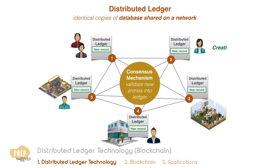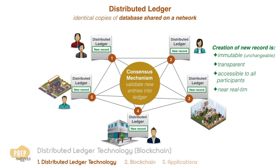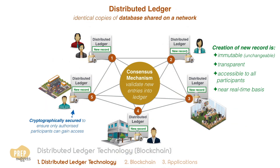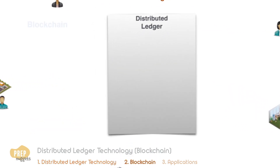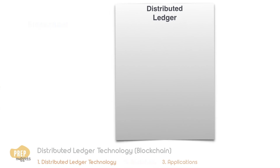To maintain the identicalness of all copies, the distributed ledger must have a consensus mechanism to validate new entries. This makes the creation of new records immutable, transparent, and accessible to all participants on a near real-time basis. Distributed ledger technology uses cryptography to ensure only authorized network participants can access the data.